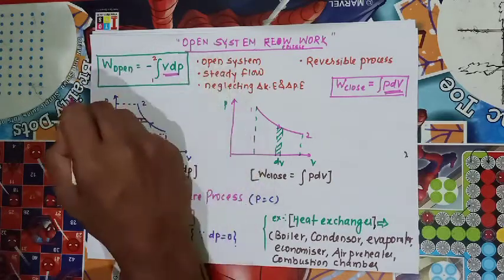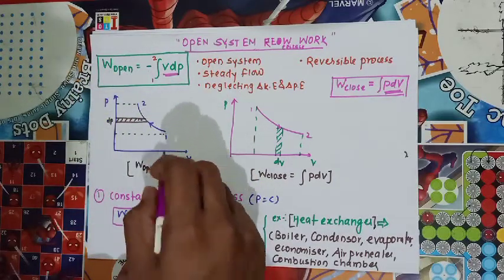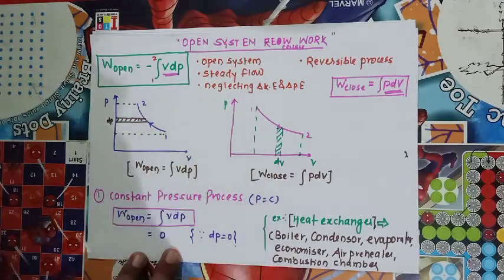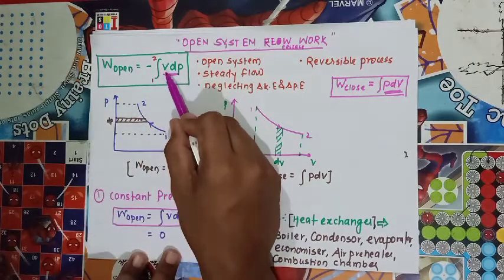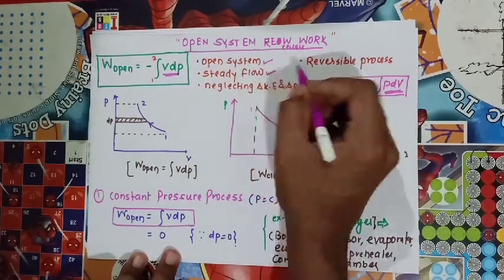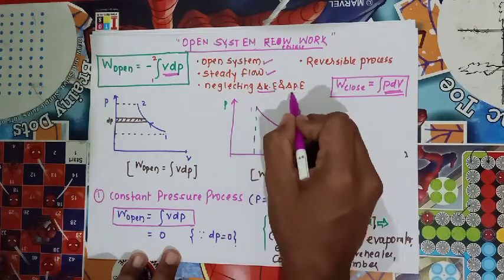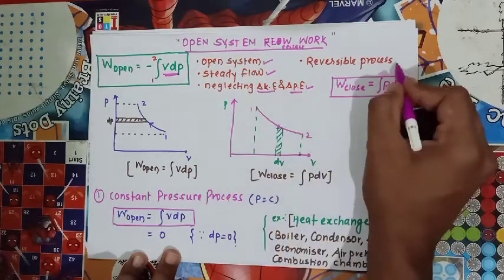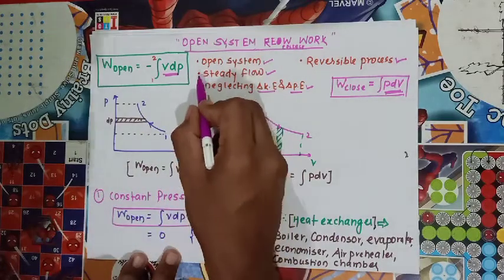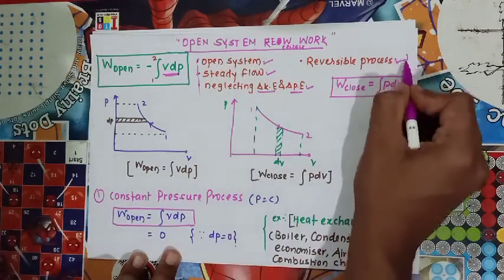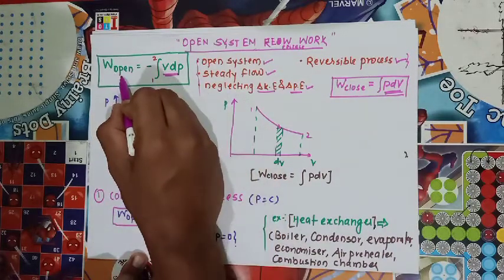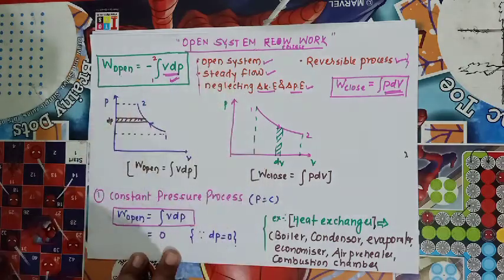This formula is applicable under certain assumptions. It is valid for the open system, steady flow, neglecting change in kinetic energy and potential energy, and if the process is reversible. Only if all these conditions are met can we apply this open work or VdP formula.